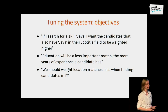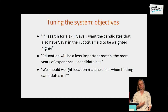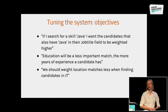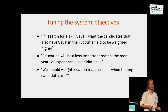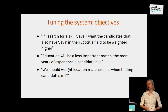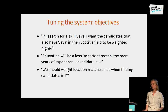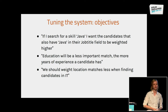Let's look at some of the tuning requests we get from customers. For example, people are saying: if I search on the skill field for the term Java, I also want candidates that have Java in their job title field to be ranked higher. This is an example of cross-field dependencies. Another example: education will be a less important match the more years of experience the candidate has. And finally, we should weight location matches less when finding candidates in IT, because people that work in IT are known to often easily relocate.